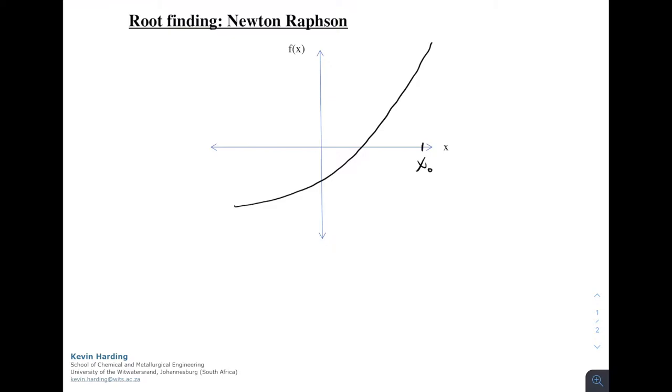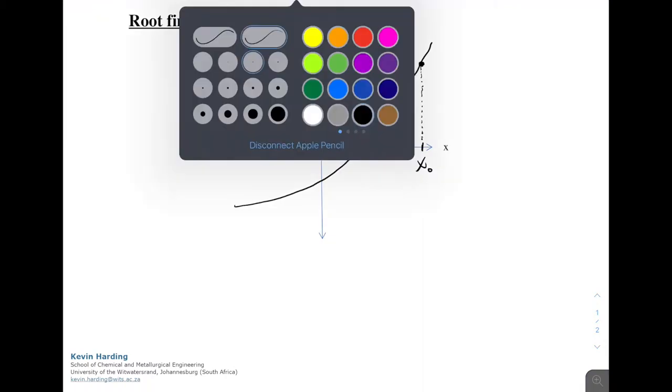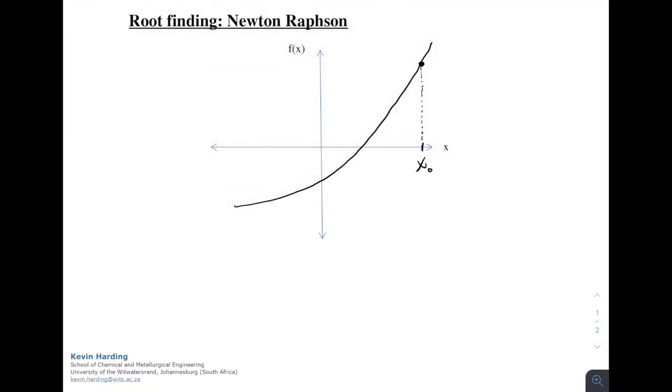So what we mean is if we guess a value of x0, we would need to check whether that value is actually giving us the intercept of the graph. In this instance, we can see that it's clearly not. What Newton-Raphson is then going to do is that at this point that is now in red, we can work out what the gradient of this curve is, and from that gradient, draw a tangent line on that graph. From that tangent line, we can then calculate where the intercept on the x-axis is, and that new intercept should be closer to the root.